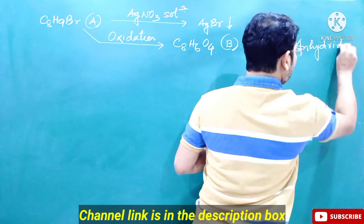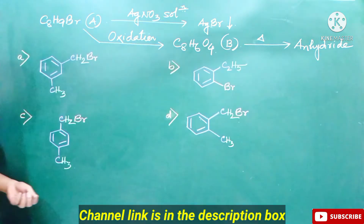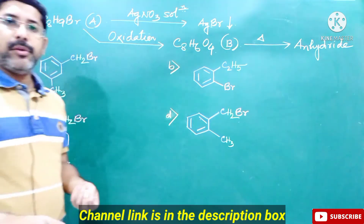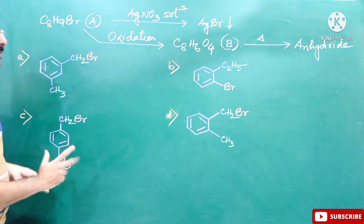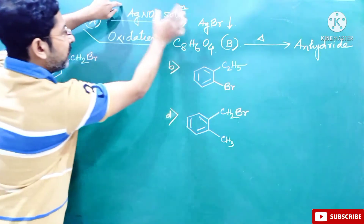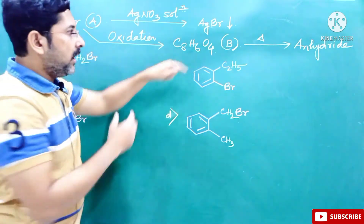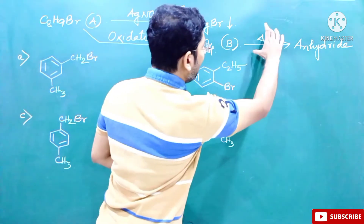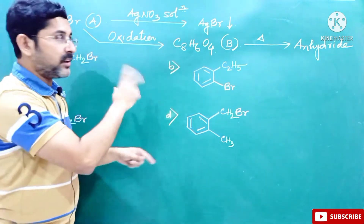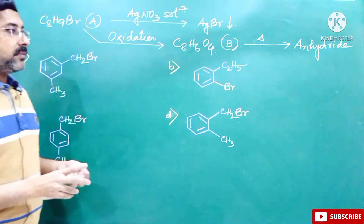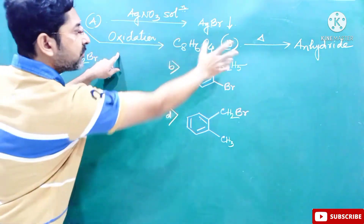We have to identify compound A. We have to consider three conditions for these compounds: one is the reaction with silver nitrate solution; another, the oxidation gives a compound which on further heating gives us the anhydride. The correct compound must satisfy all three of these conditions.